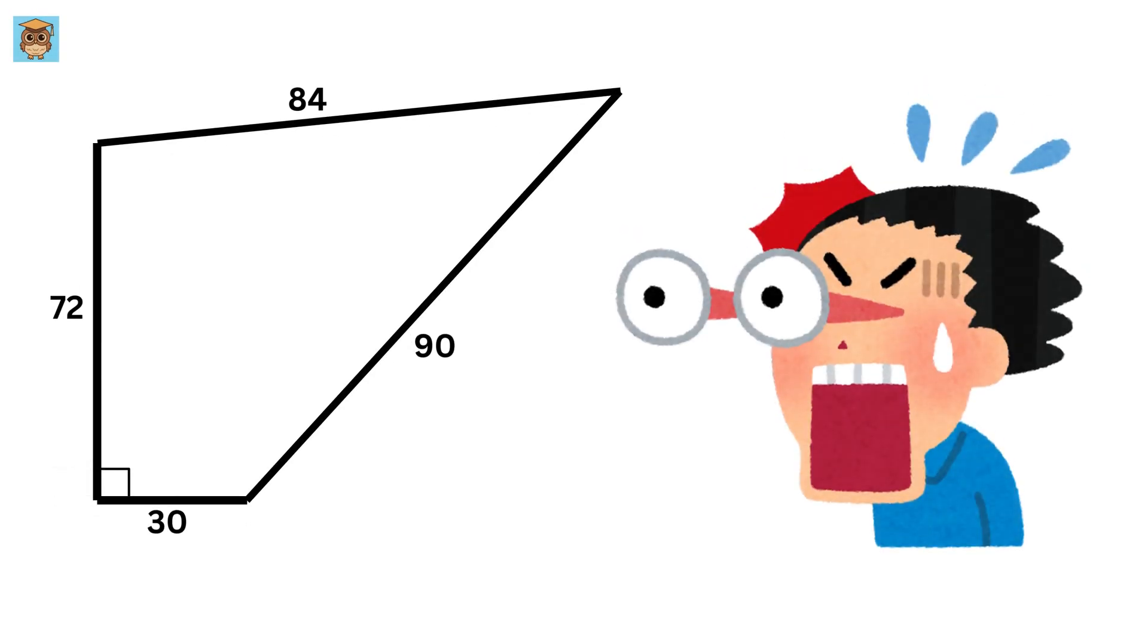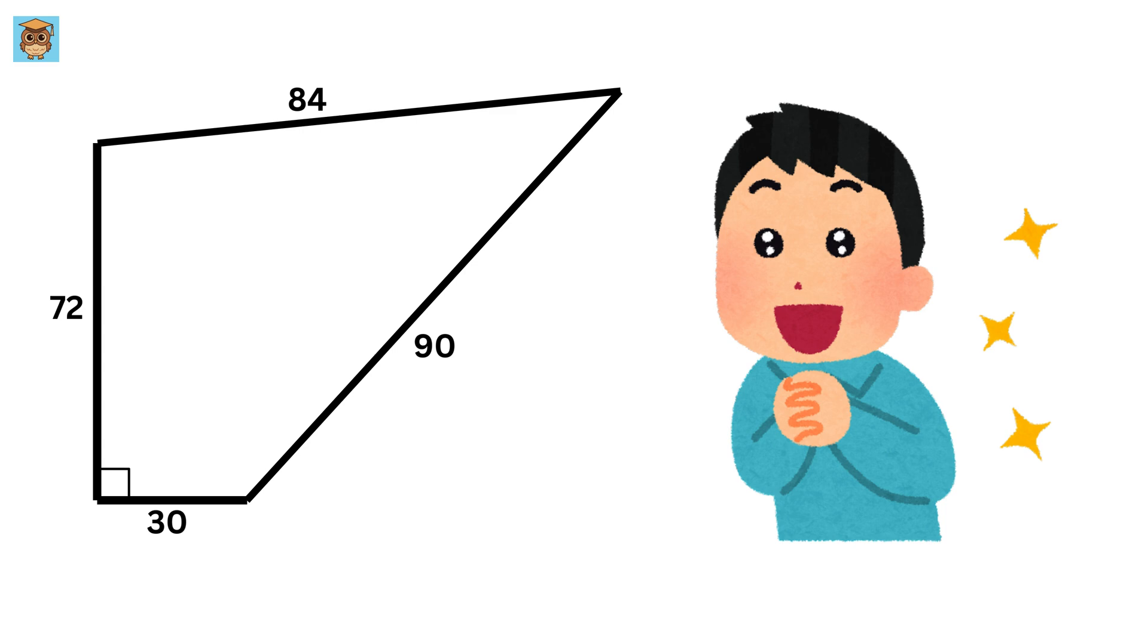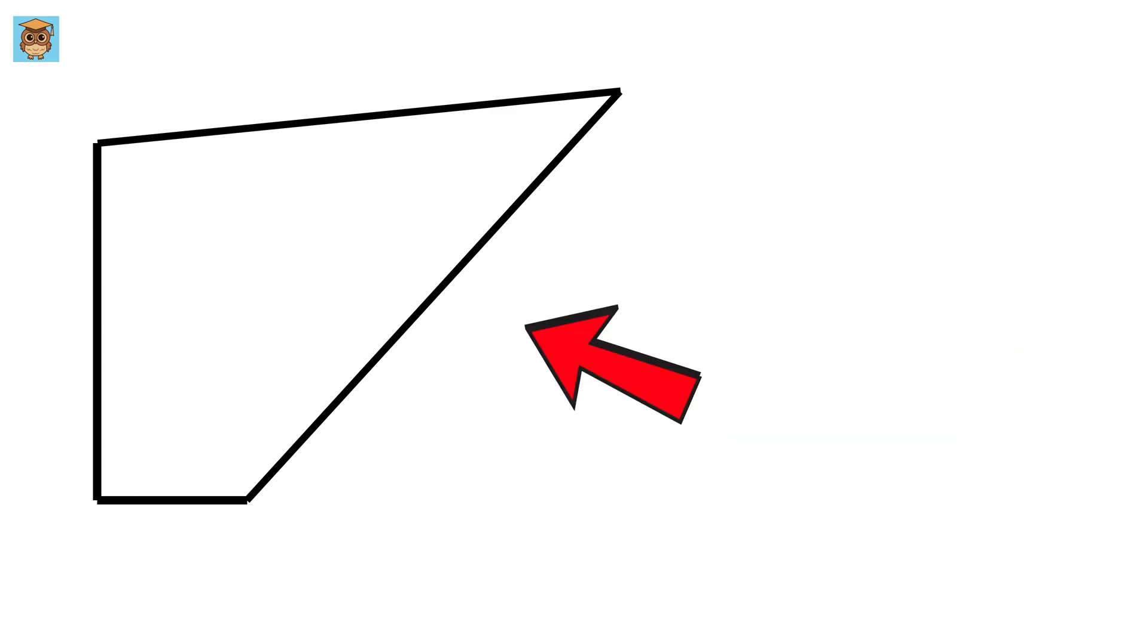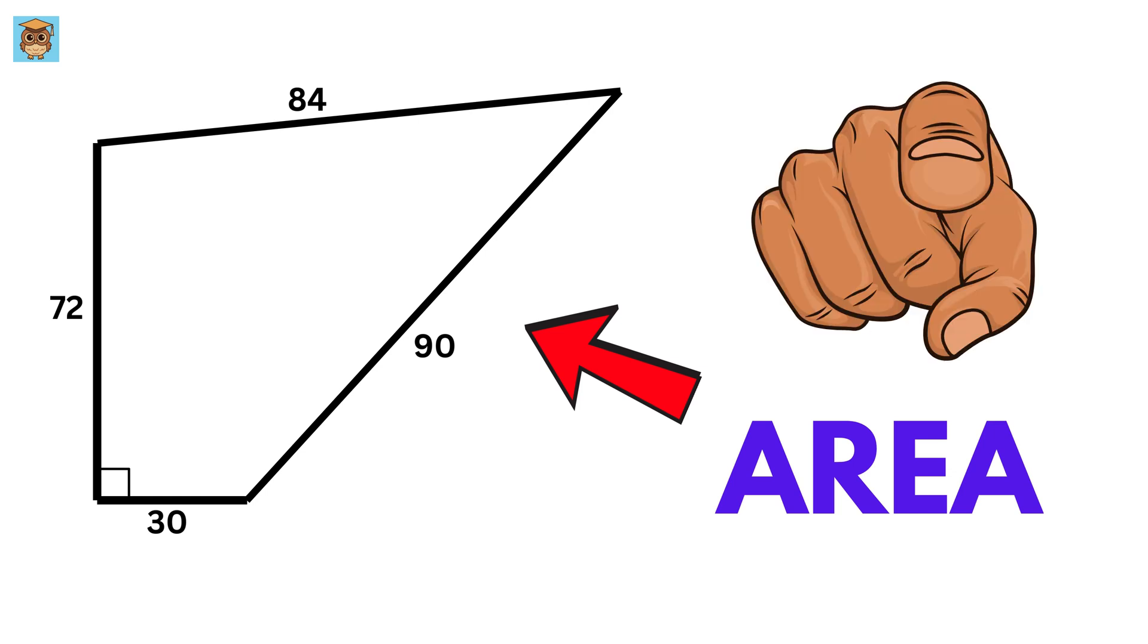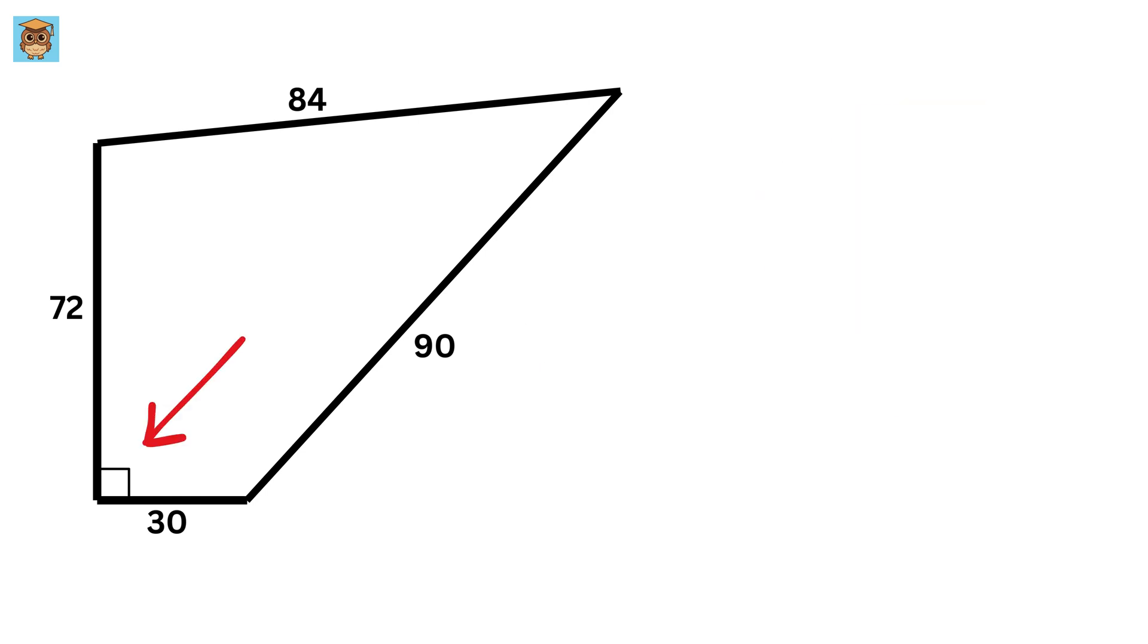This is one of the jaw-dropping geometry questions that you will struggle to solve but love the solution. We have a quadrilateral whose all four sides are given to us: this is 30, this is 72, then this is 84, and this is 90 units. We are also given that this is a right angle. Our job is to find the area of this quadrilateral.